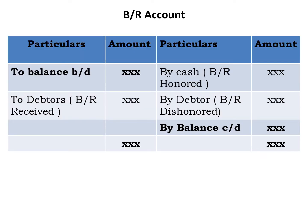Coming to the preparation of the BR account: when we prepare it, we may have to find out the opening BR, closing BR, cash received against BR, or BR received, depending on the question. The opening balance of BR appears towards the debit side as 'To balance brought down,' and the closing balance of BR appears towards the credit side as 'By balance carried down.' BR received is a contra entry — it affects both the BR account and the debtors account. For BR received, the journal entry is: BR account debit to debtors account. So in the BR account, we go to the debit side and write 'To debtors' for BR received.